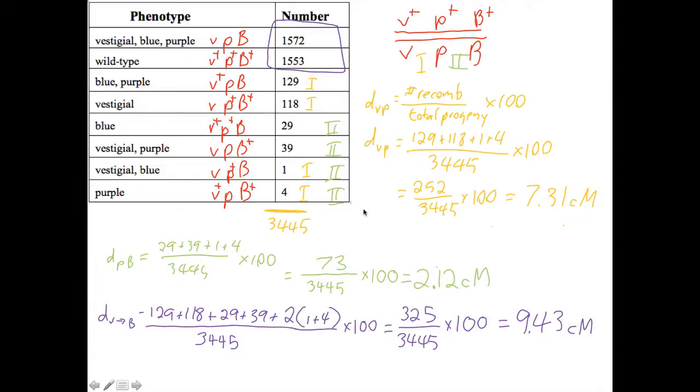And the double recombinant, we're going to count these as two crossover events each because they are double crossovers. Add up all the numbers. 129, 118, 29, 39. That's what we have here. And finally, 2 times 1 plus 4. Add those up. You should get this number and the distance is 9.43.